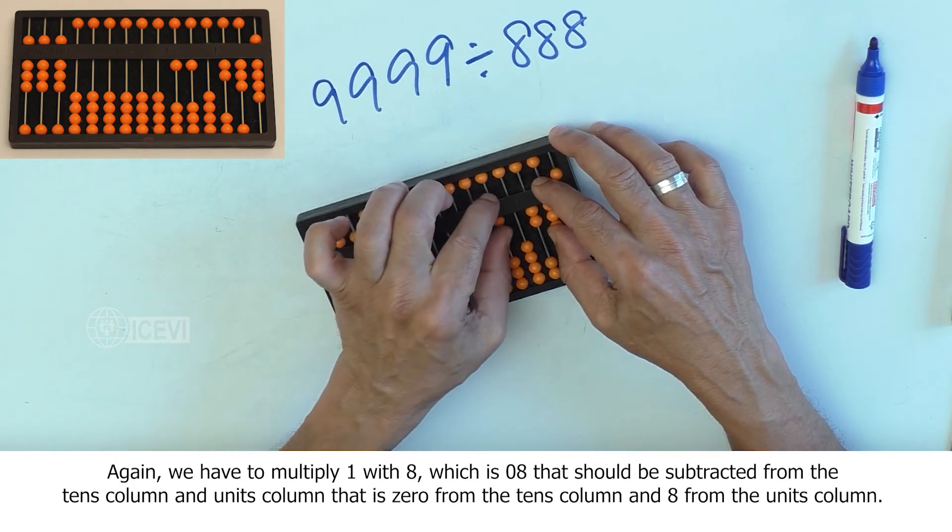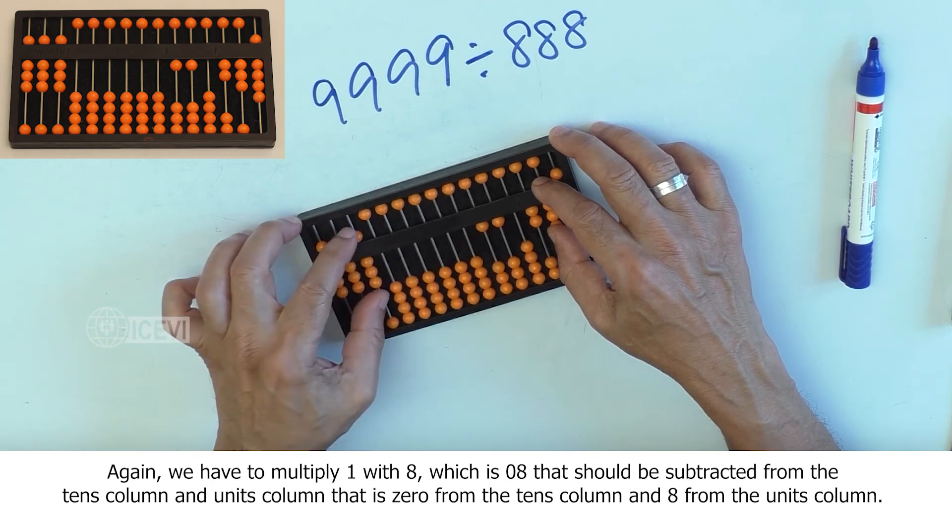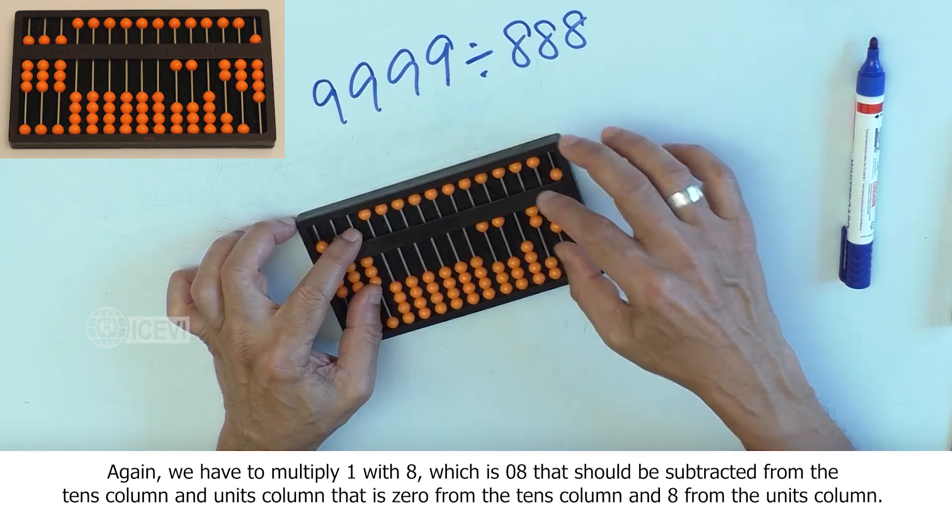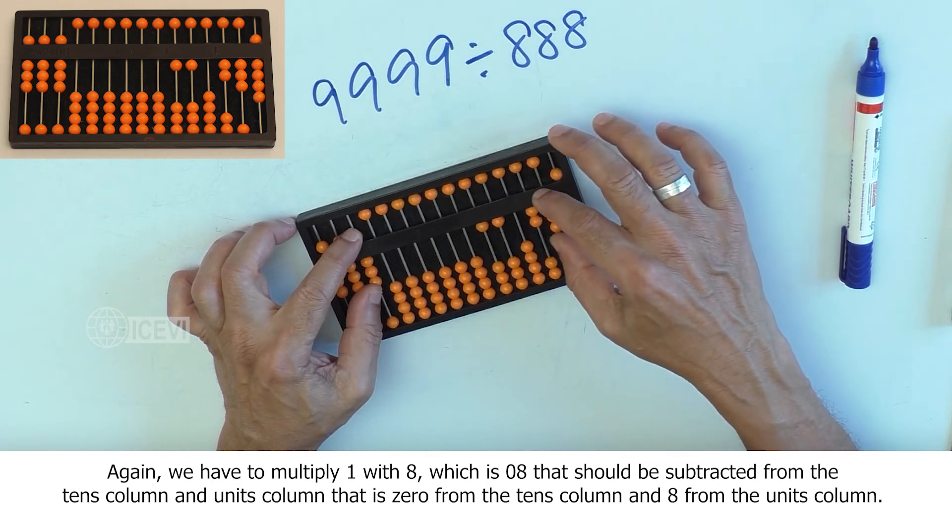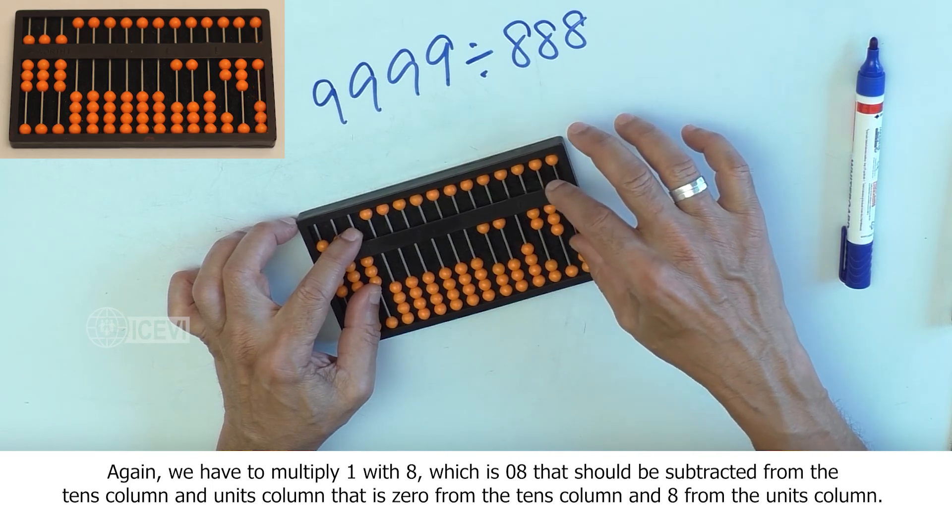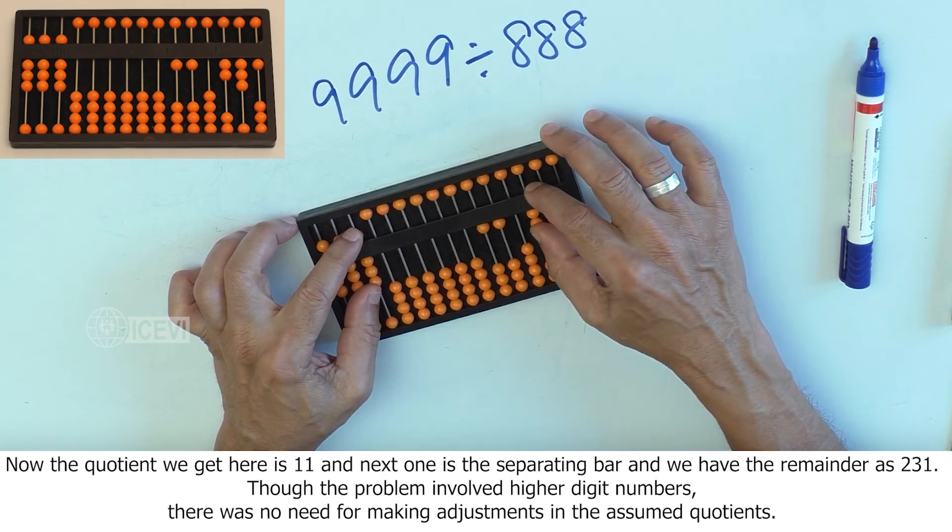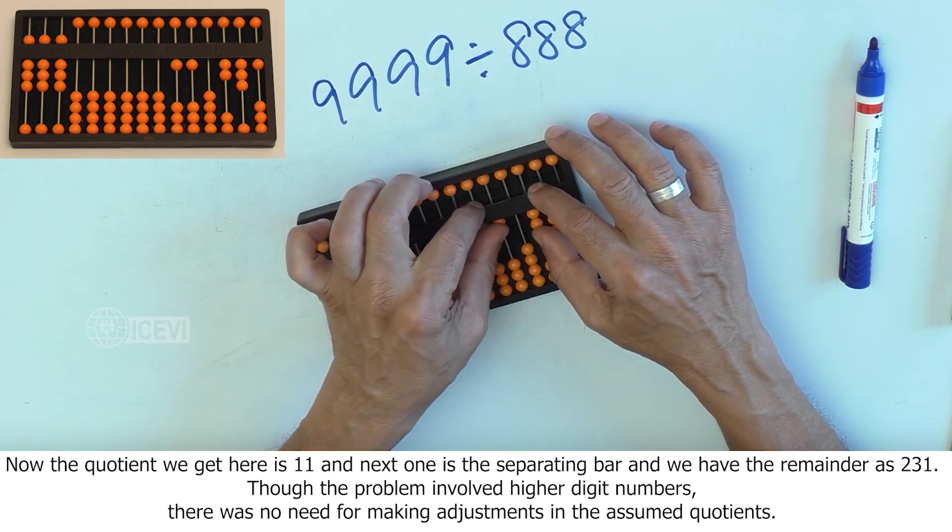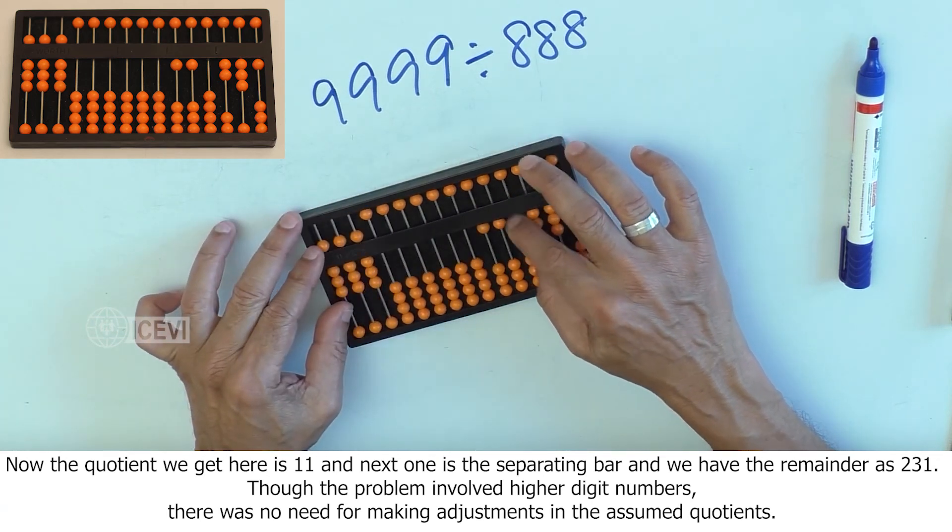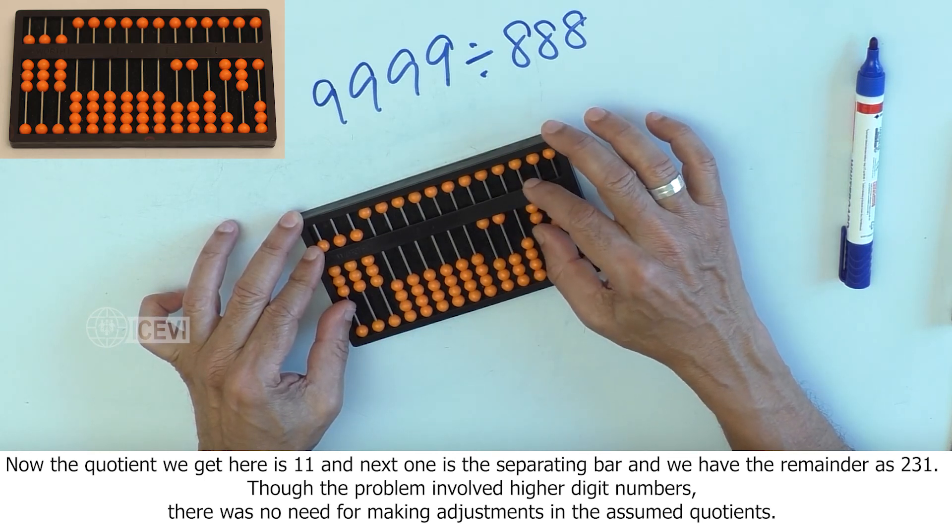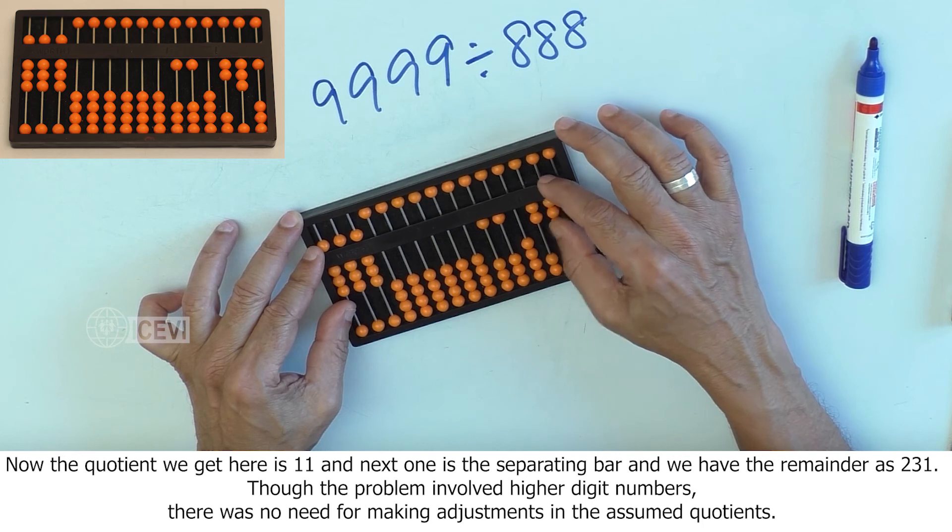And again, we have to multiply 1 with 8, that is 08. That should be subtracted from the tens column and the units column. That is, 0 from the tens column and 8 from the units column. Now the quotient we get here is 11, and next one is a separating bar. And we have the remainder as 231.